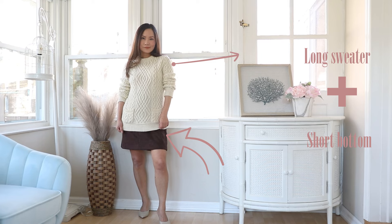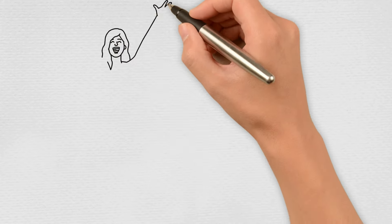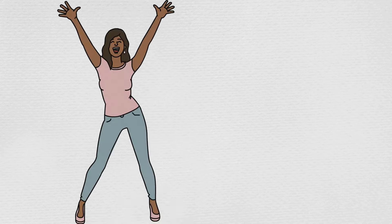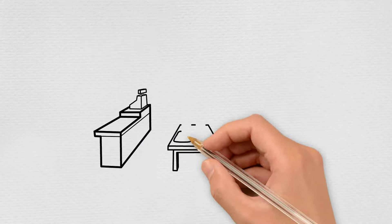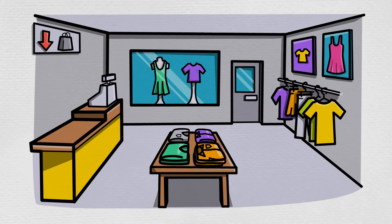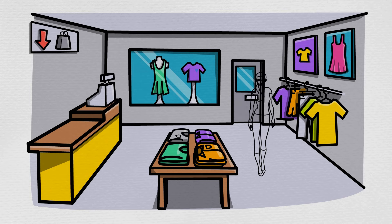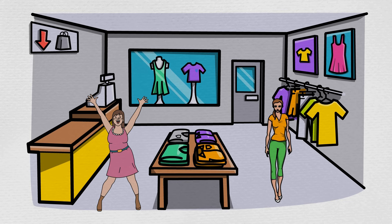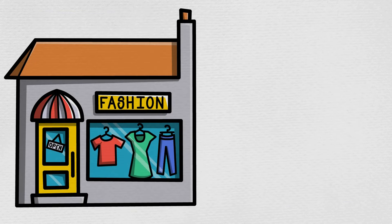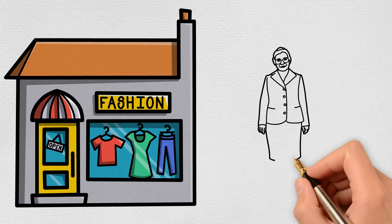Rule number three: if your sweater is long, wear it with a short bottom. But first, let's take a step back. There's a correlation between our age and the length of our sweater. If you go to a store catering to younger shoppers like Express or ASOS, you'll see a lot of crop tops. On the other hand, retailers for women over 50, like Chico's and Talbots, show a lot of longer tunic tops.